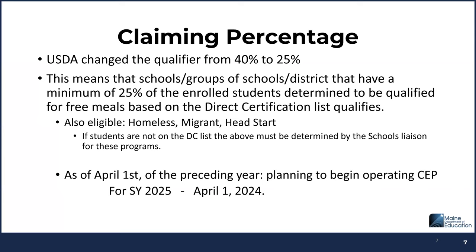Regarding claiming percentages: USDA changed the qualifier from 40% to 25%. This means a group of schools, a district, or whatever you decide — if they get an ISP of 25% or higher, unrounded, they can participate. As of April 1st of the preceding year, you can plan to begin operating CEP. So if you want to look at the possibility of participating in CEP beginning in school year 2025, the data we're going to use to certify you is as of April 1st, 2024 — roughly two months away.